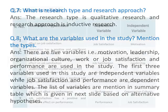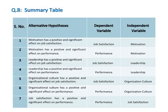Here is the summary table of dependent and independent variables. You can easily find the dependent and independent variable from the hypotheses given in the research article. An important tip: the variable that comes last in a research hypothesis — or after a preposition — is the dependent variable.